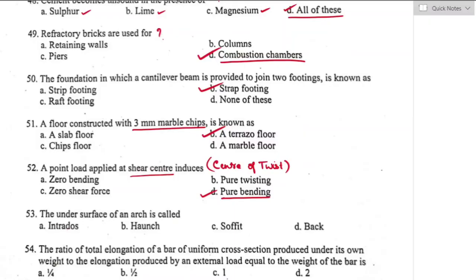Question number fifty-three: the undersurface of an arch is called the soffit. Option C is the right answer. A soffit is the underside part of an arch — a protective covering under the eaves of a house, or the surface of an arch seen from below.